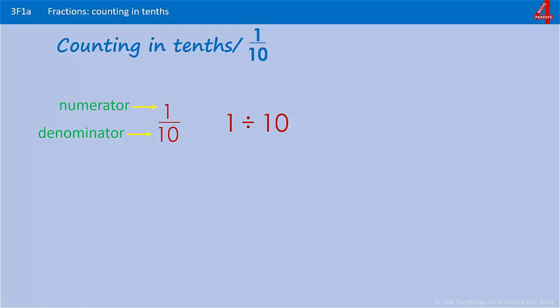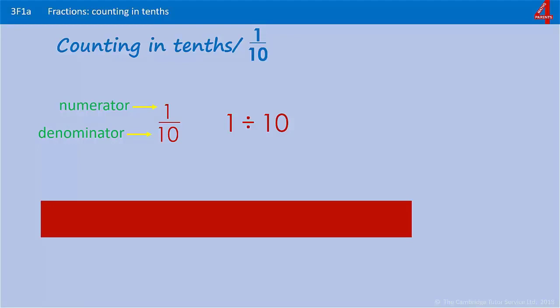So one tenth is one divided by ten. If we have a piece of card, we're going to divide it into ten equal pieces. Each one of those pieces is one tenth of the whole shape.